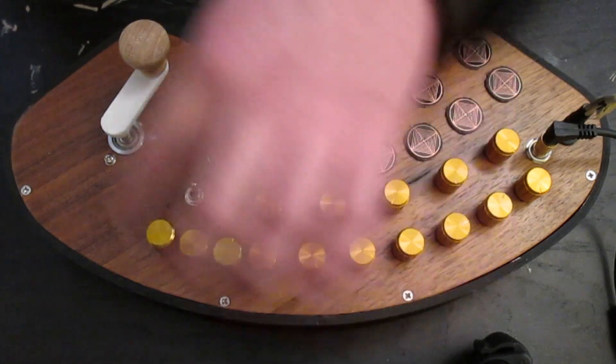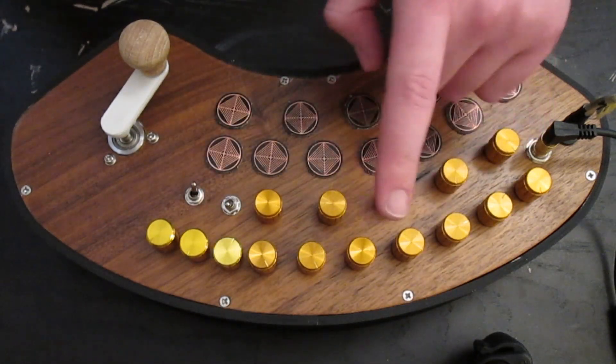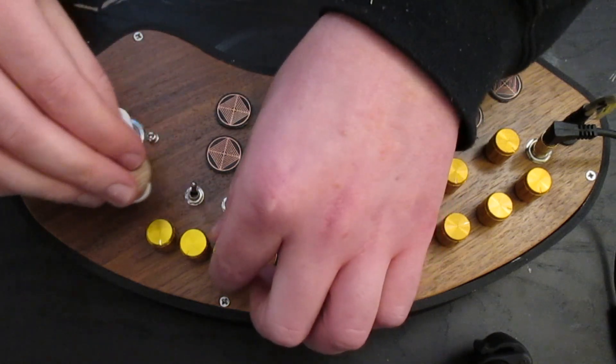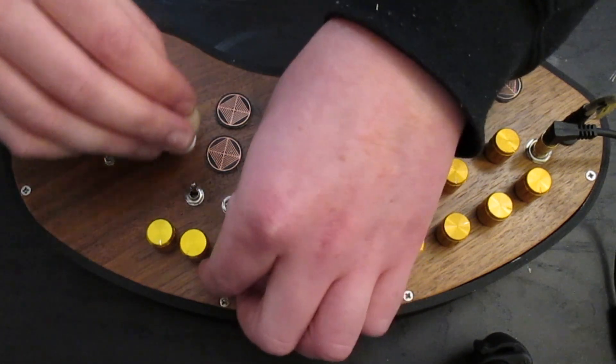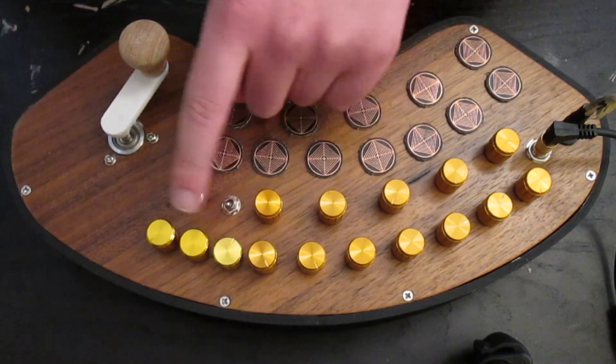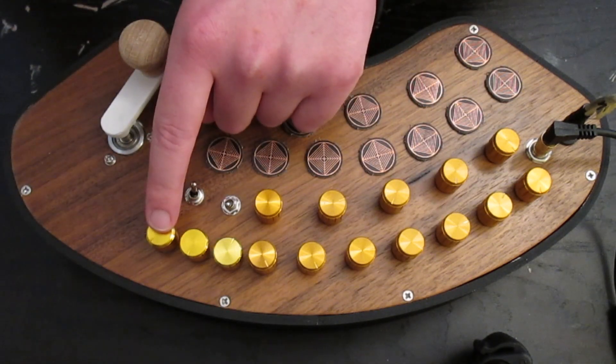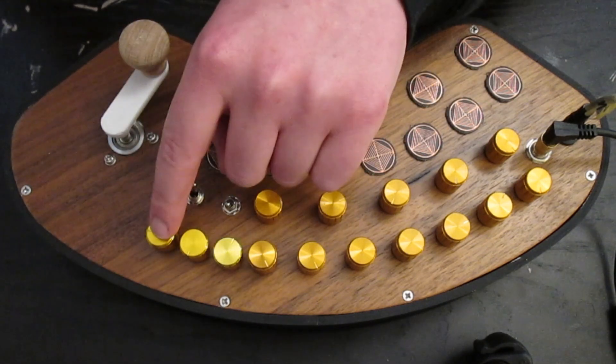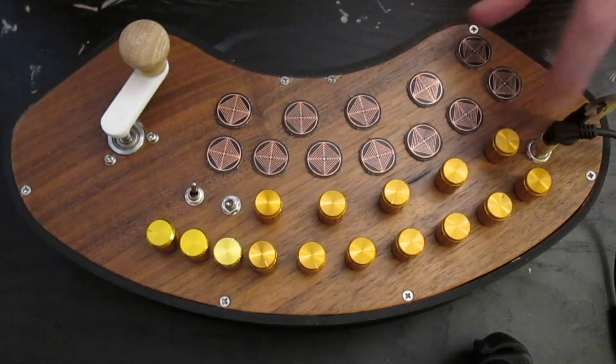The other controls that we have over here are for the resonance of the master filter. And then we also have a master envelope control. So the more clockwise this knob is turned the longer the attack and release times of all of the touch envelopes.